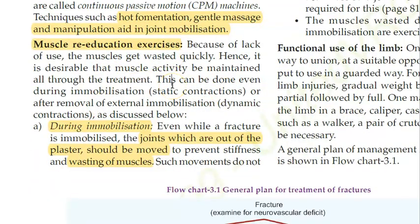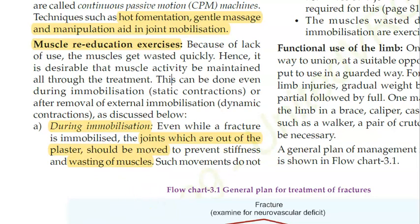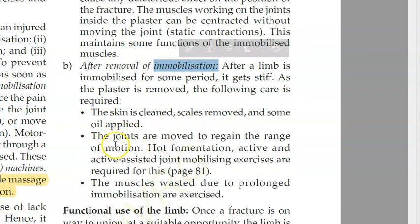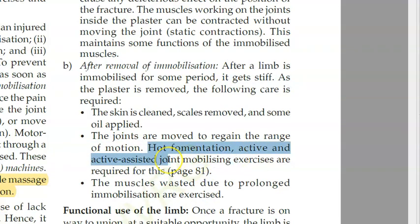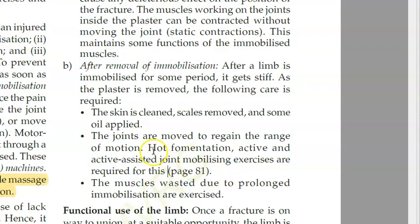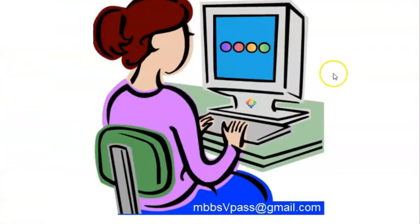For muscle re-education, use and train whatever muscles are available and permitted. Only joints and muscles outside the plaster should be exercised. Once immobilization — cast or splint — is removed, you can perform hot fomentation, active and active-assisted joint mobilizing exercises.